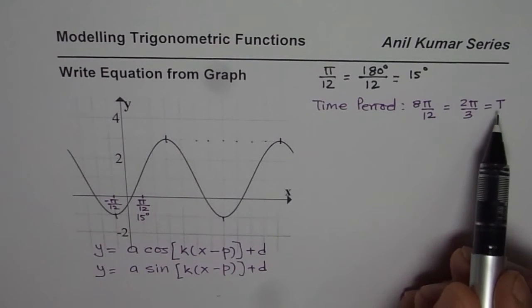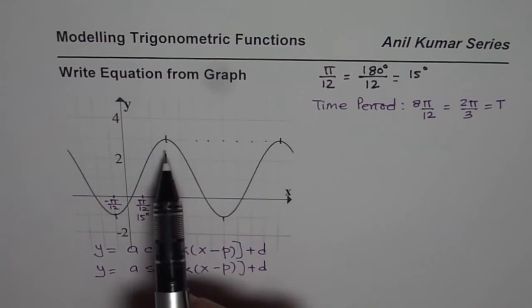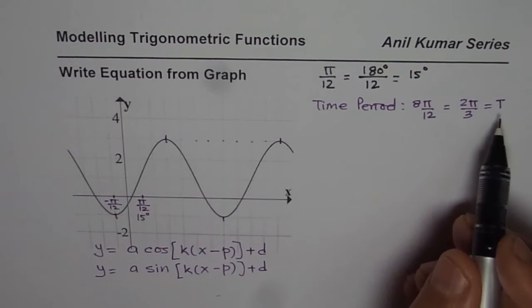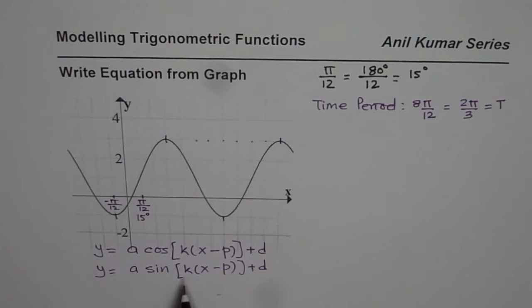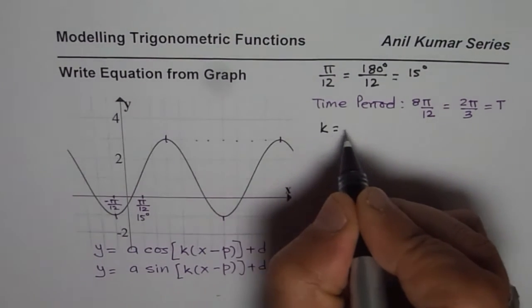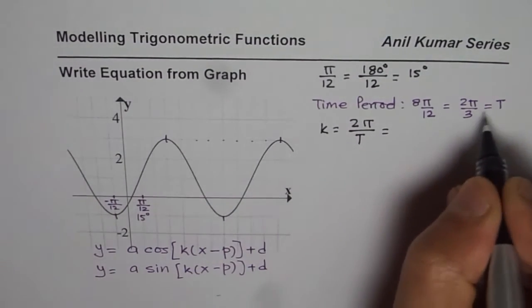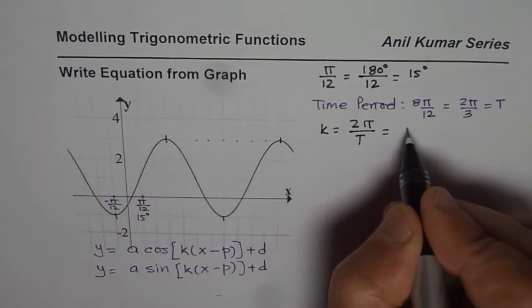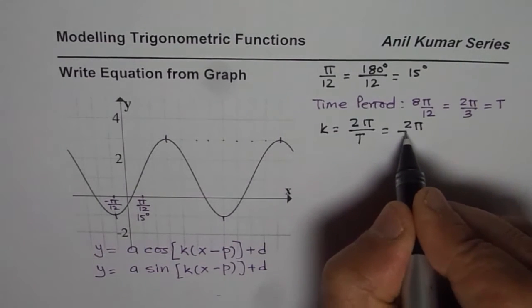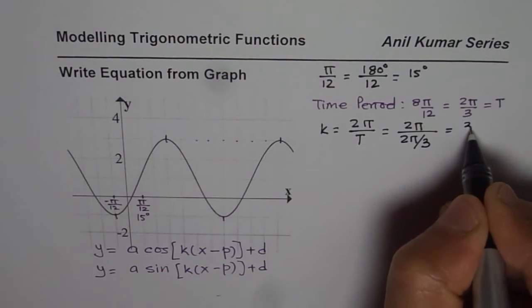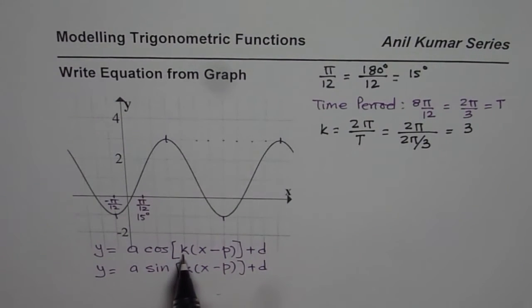We have calculated that the time period is 2π/3 which is the horizontal distance between two maximums. Now from here we can find the value of k. It is number of cycles in 2π. So k can be written as 2π divided by T. In this particular case since T is 2π/3, we can write this as 2π divided by 2π/3 and that gives us a value of 3. So k is 3.